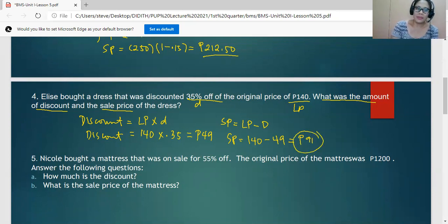For number five, Nicole bought a mattress that was on sale for 55% off. The original price of the mattress was 1,200, so this is the list price. We're asked to work on two problems: How much is the discount? What is the sale price? The sale price is the selling price. Same with problem number four, we have to work on the discount for part A.